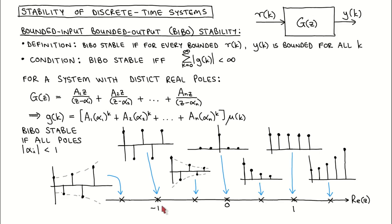If all the poles lie between minus 1 and 1, then all the components will decay to 0. The sum over the magnitude of the impulse response will be finite, and the system is therefore stable.